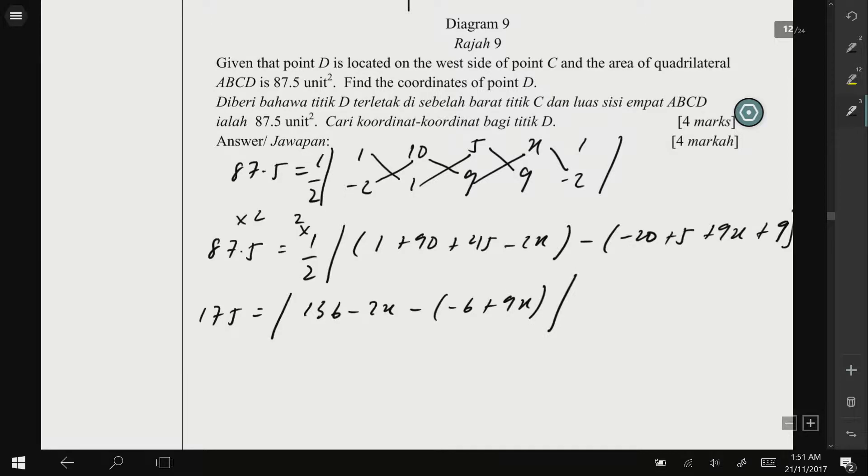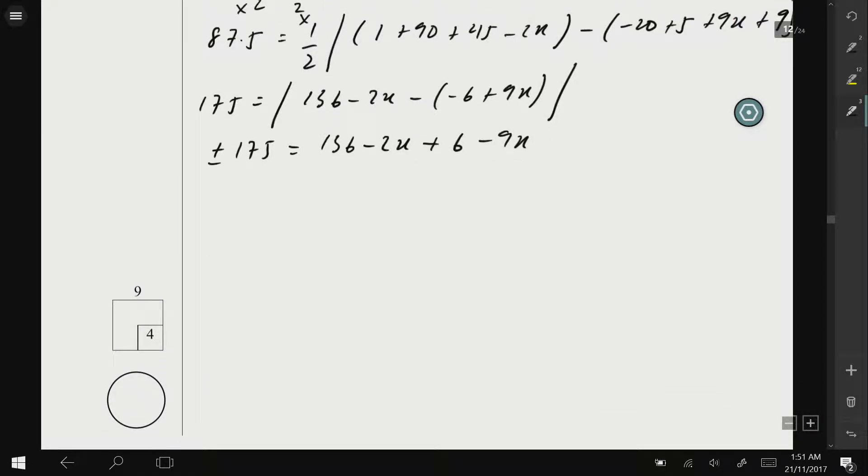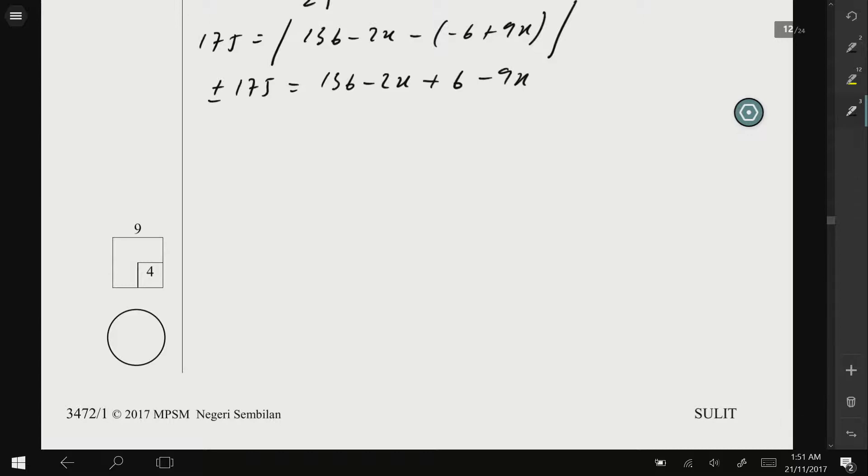Removing or eliminating modulus, we should get ±175 = 136 - 2x + 6 - 9x. So we know that we have two answers for this equation. The first equation is 175 = 136 - 2x + 6. Let me simplify this first, so 136 plus 6 is 142 minus 11x. So this is the first part.